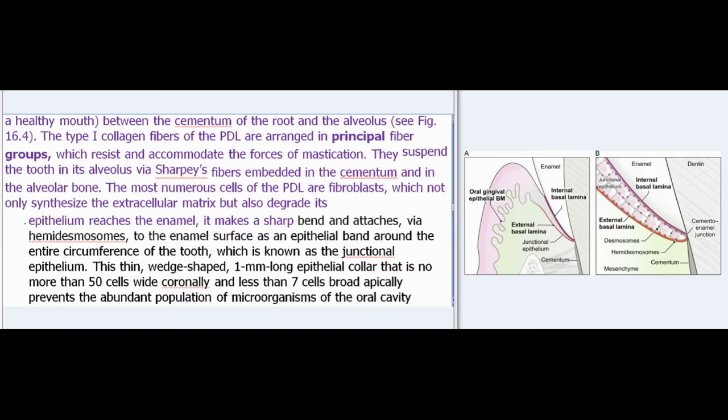The type I collagen fibers of the PDL are arranged in principal fiber groups, which resist and accommodate the forces of mastication. They suspend the tooth in its alveolus via Sharpey's fibers embedded in the cementum and in the alveolar bone. The most numerous cells of the PDL are fibroblasts, which not only synthesize the extracellular matrix but also degrade it.